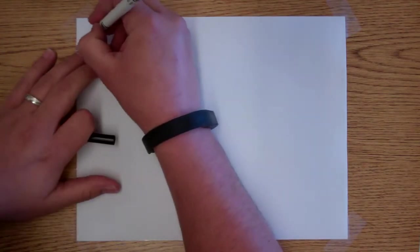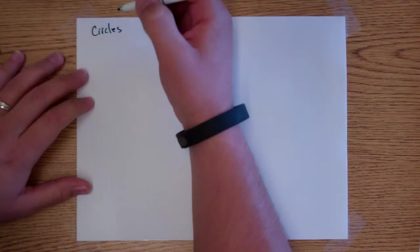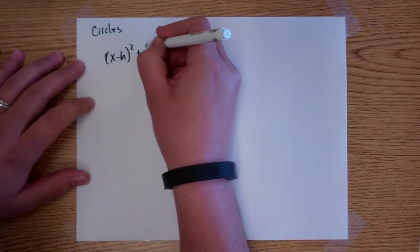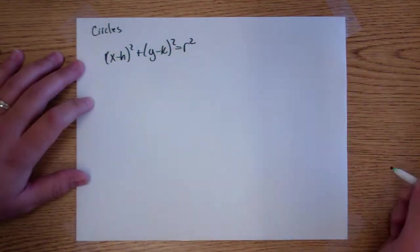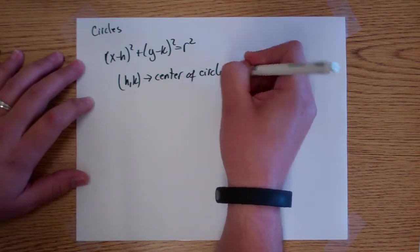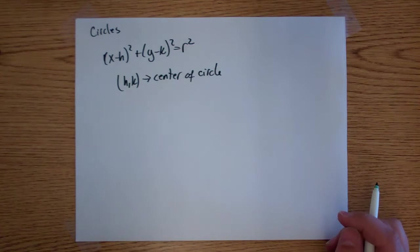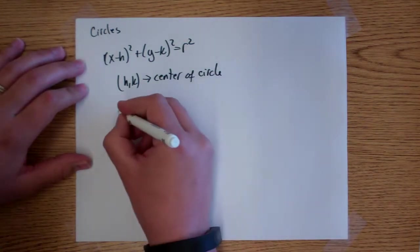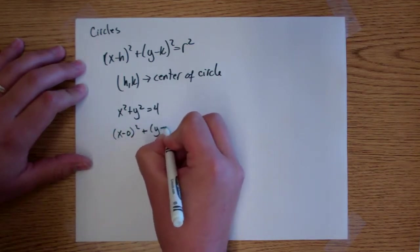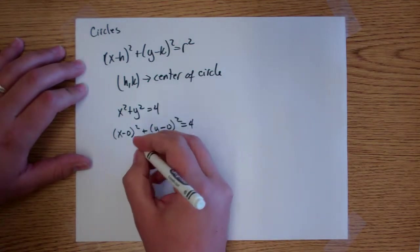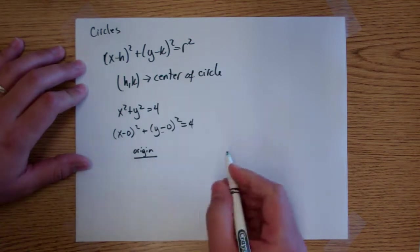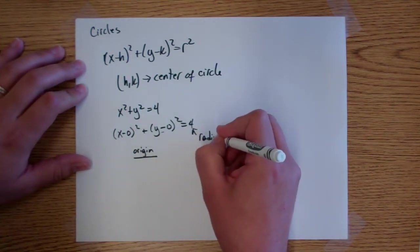The majority of this video I wanted to spend on circles. The standard form of a circle, which you should have seen in geometry, is (x minus h) squared plus (y minus k) squared equals r squared, where (h, k) is the center of the circle. So if you had something like x squared plus y squared equals 4, we could rewrite this as (x minus 0) squared plus (y minus 0) squared equals 4 — so the circle is centered at the origin. And since this is r squared, the radius would be 2.